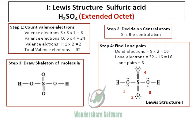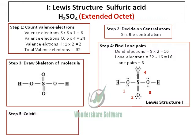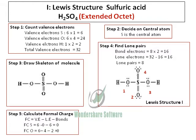Sulfur has the ability to extend its octet because it has a D subshell, and because of that it can have 12 electrons surrounding it. When I calculate the formal charge, this structure gives a net formal charge of 0. So the Lewis structure with sulfur double-bonded to O has an extended octet with 12 electrons surrounding sulfur and has no formal charges on it.